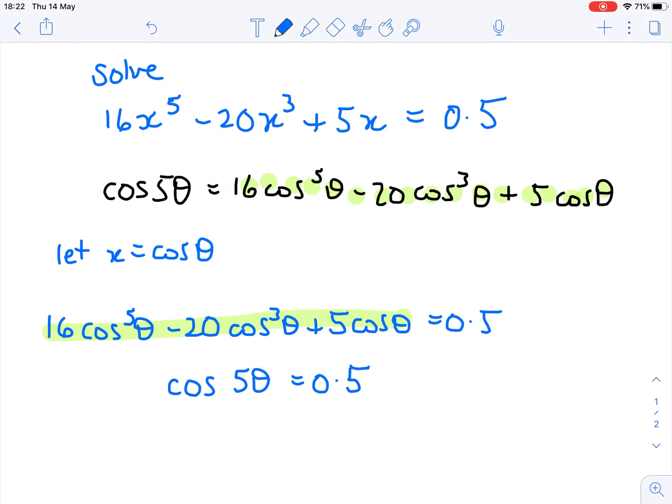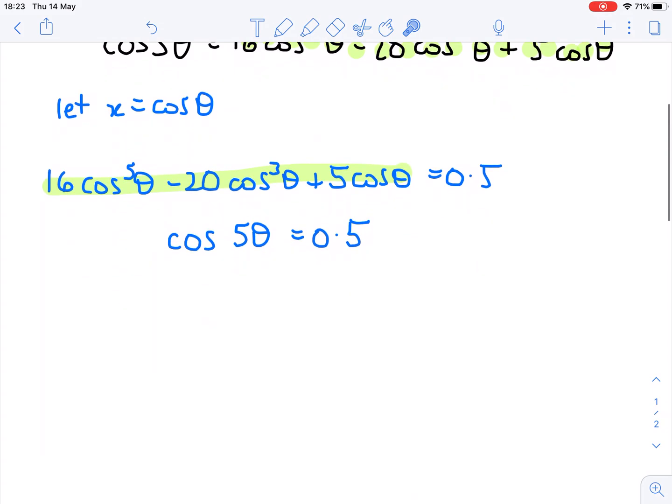I do need to remember that in solving this equation here, I'm going to generate values for θ. What I want are values for x, so I need to go back to my original supposition that x = cos(θ). When I've got values for θ, I need to find their cosine value in order to generate values for x. But now we've got something that looks a little bit more solvable than what we had before.